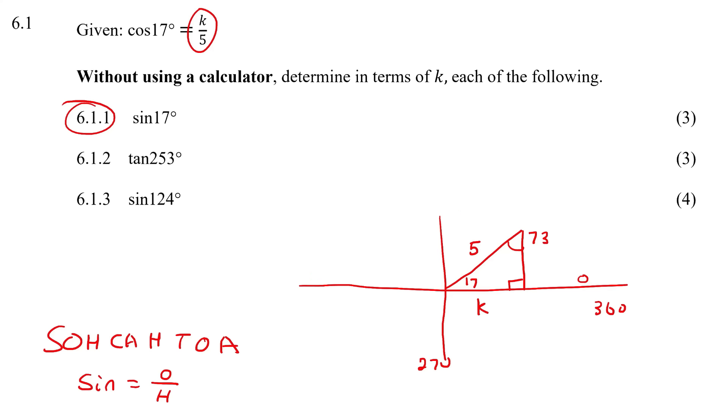We know that cos is adjacent over hypotenuse, so this is going to be k and this is going to be 5. Then we need to use Pythagoras to find the missing side. You would say 5² equals k² plus y², so 25 equals k² plus y². Then 25 minus k² equals y², and to get y alone you say square root of 25 minus k². That does not become 5 minus k. You can't do the square root of this entire piece at once.